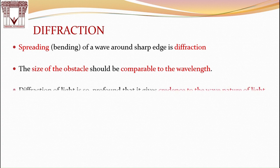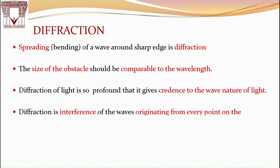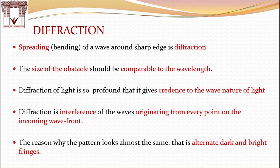Now come to diffraction. As we discussed, bending at sharp edges. But is it enough to get diffraction? No. The size of obstacle should be comparable to the wavelength. And the diffraction is so profound that it gives the credence to the wave nature of light. Diffraction is a kind of interference. The waves are originating from every point on the incoming wave front. The reason why the pattern looks almost the same that has alternate dark and bright fringes.